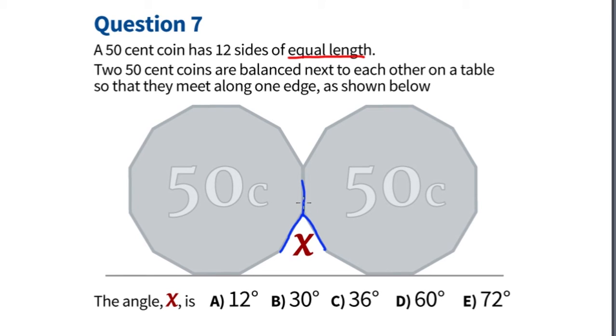I can see that we have one angle right here and we have an equal angle right here. We'll call this alpha, and then we have X. We know that X plus 2 alpha has to equal 360 degrees because it goes in a complete circle.